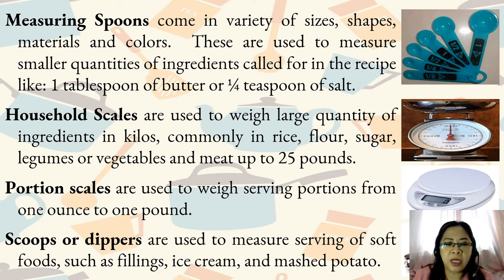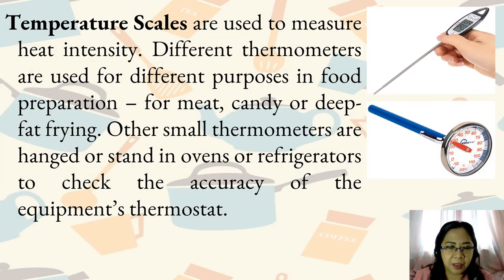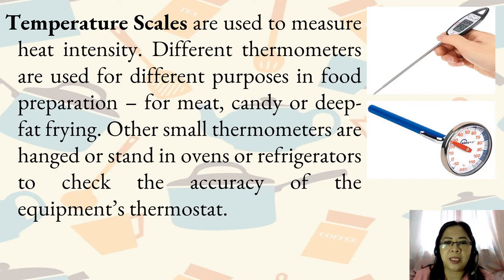Scoops or dippers are used to measure servings of soft foods such as fillings, ice cream, and mashed potato. Temperature scales are used to measure heat intensity. Different thermometers are used for different purposes in food preparation, for meat, candy, or deep fat frying.